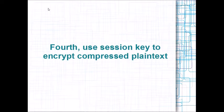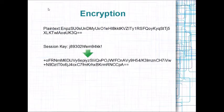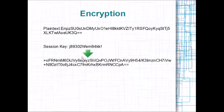Fourth, we use the session key to encrypt the compressed plaintext. This is our plaintext — the compressed plaintext from step one. This is the session key we just generated, and using an online AES tool, I came up with this as our ciphertext. This is one of the two things that Bob is going to be sending over the network to Alice.